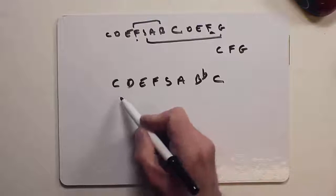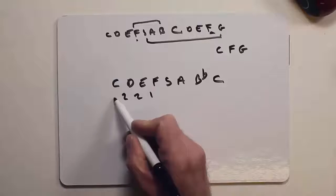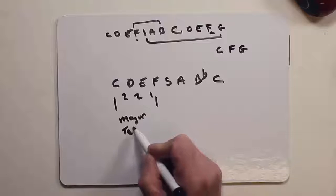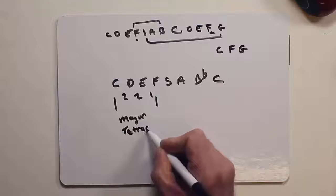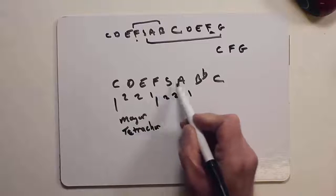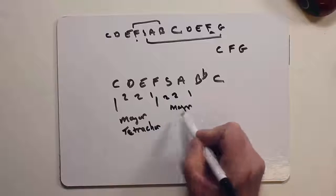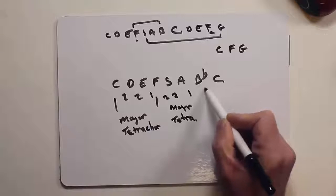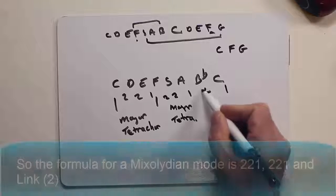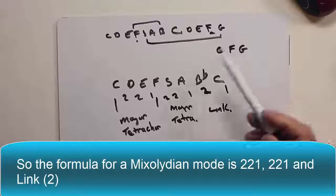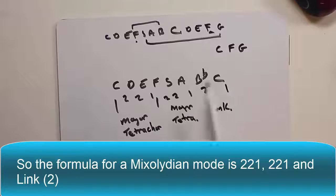And if you look here, we get the 2, 2, 1 pattern, which is a major tetrachord. You're writing all this down, because you will be tested. And then you get another 2, 2, 1 pattern there, between F, G there, and that's another major tetrachord. And then here we have the link, which is 2. So the link's 2. So if you remember, a major scale was basically a 2, 2, 1, link, 2, 2, 1. A Lydian scale was link, 2, 2, 1, 2, 2, 1. And a Mixolydian is 2, 2, 1, 2, 2, 1, link. So the link has just changed.